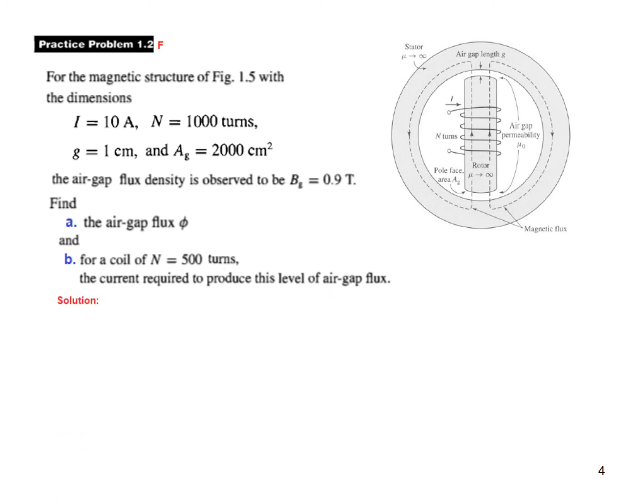So let's see. First part, we'll use this formula: flux density is φ over the area, and from here we can find the flux is Bg×Ag. Bg is given here 0.9 tesla, so we plug in that. Ag, again 2000 centimeters means 0.2 meter square, so we put in that. So the flux is 0.18 weber.